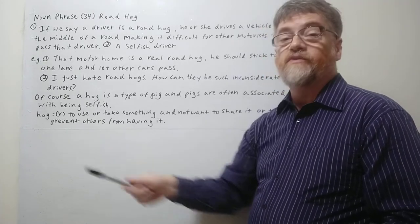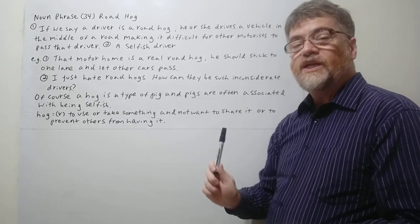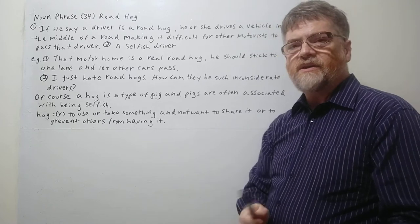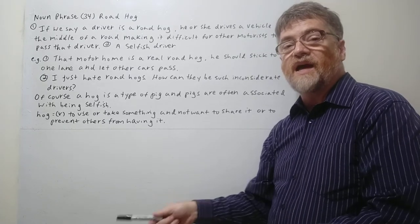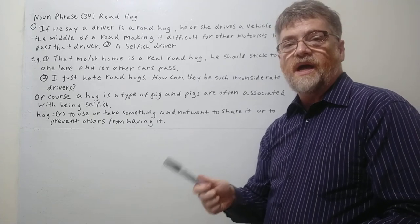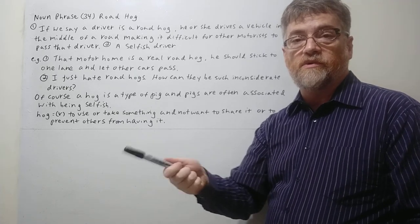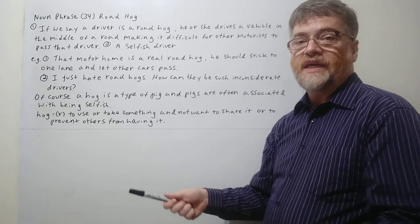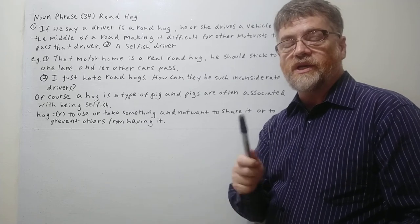And we could look at hog as a verb too. As a verb it means to use or take something and not want to share it or to prevent others from having it. So yeah, that's a perfect example of a hog. So you can also say somebody is hogging something. They're not sharing it. Like maybe sometimes we say somebody's hogging the remote control. They don't want other people to use the remote control. So in this sense this driver, this motorist is hogging the road. He's taking most of the road for himself, not being considerate of other drivers.